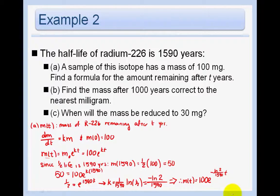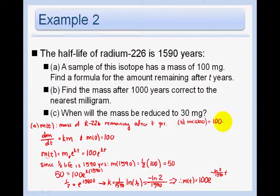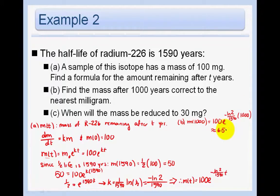In part b, find the mass after 1,000 years correct to the nearest milligram. We plug t = 1000 into m(t) = 100e^(−(ln2/1590)·1000) and calculate on our calculator, getting about 65 milligrams.